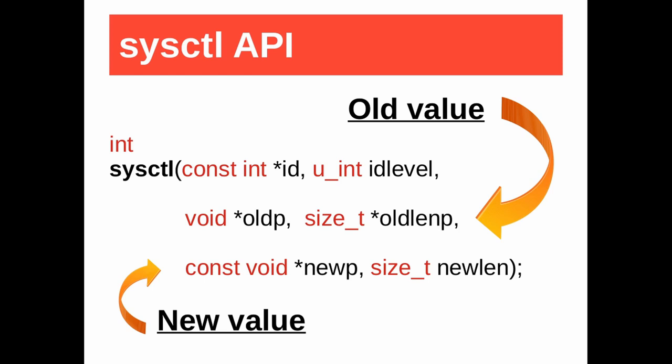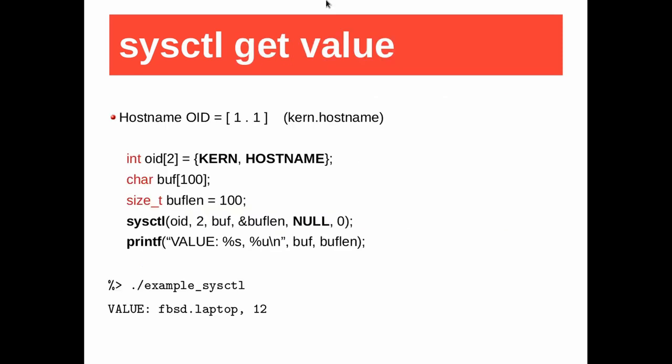While old_p will be filled with the old value. Here is an example to get the value of an object — in this case, the hostname. The first argument is the OID, a well-known OID defined by constants. The second argument is 2, representing two levels. The third argument is the buffer that sysctl will fill with the value of the hostname. The fourth argument is the size of the buffer before the call; after the call, sysctl sets it with the size of the hostname. The last arguments are null and zero, so sysctl won't set a new value. The value of the hostname is fbsd.laptop, shown at the bottom of the slide.